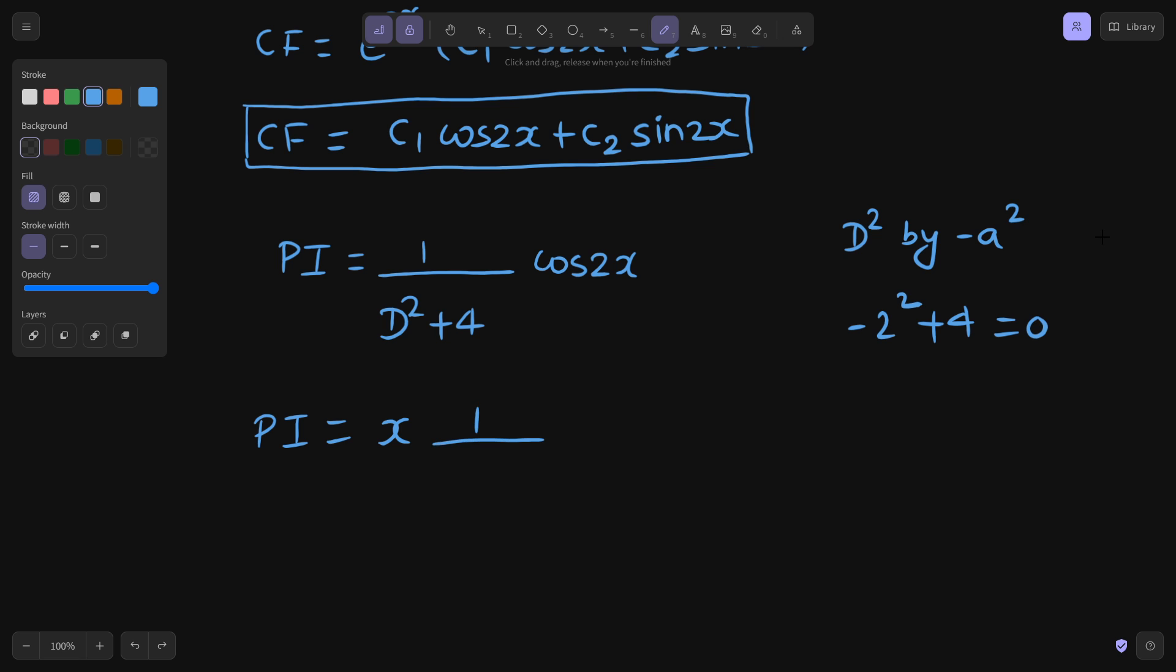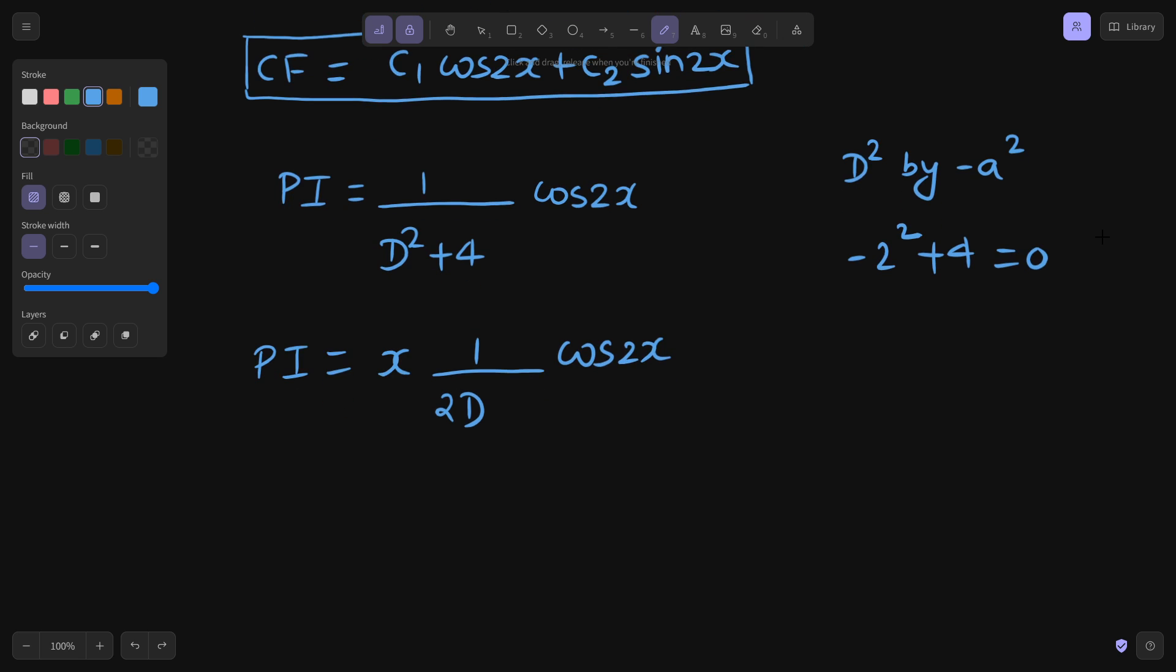If you differentiate D² with respect to D, you will get 2D. 4 derivative is 0 and cos 2x as it is. Again apply same thing but D² is not there. So how we can apply? You can do two things from here. Either you can create D² by multiplying the numerator and denominator by D, or 1 by D is nothing but integral.